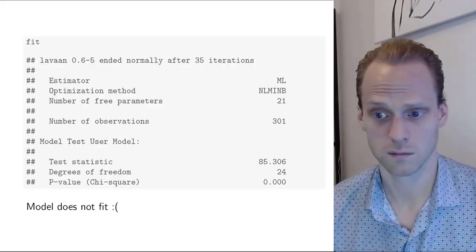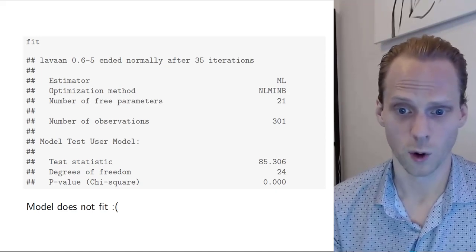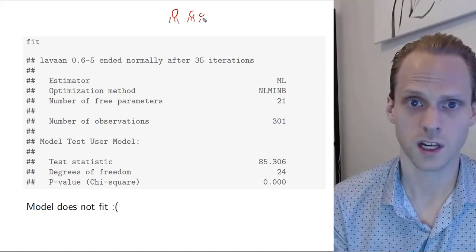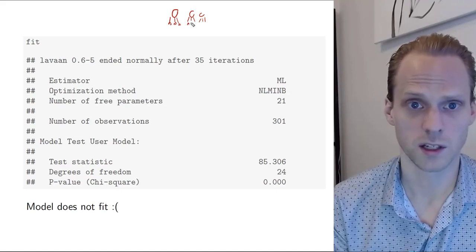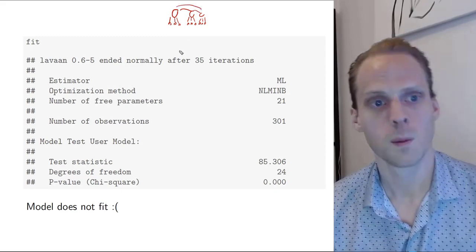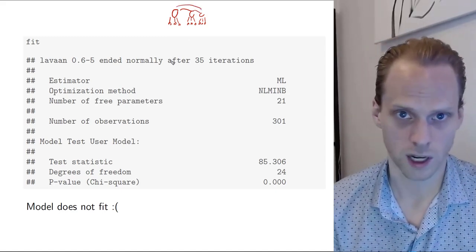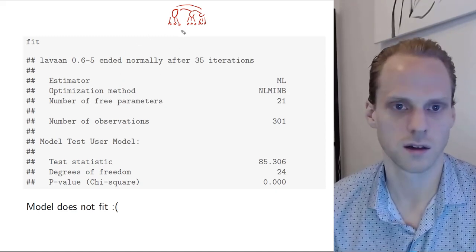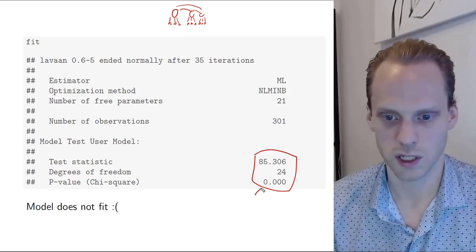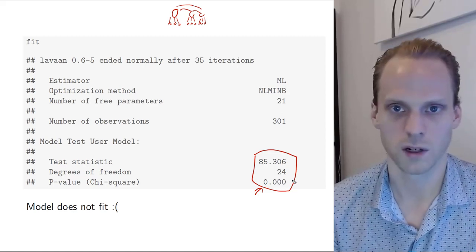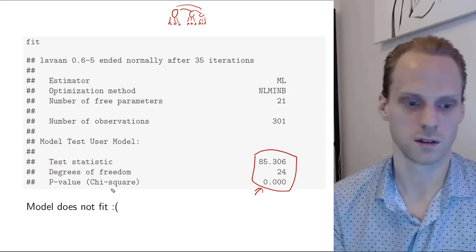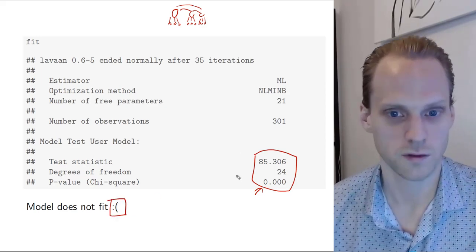Let's look at Lavaan. We have our Lavaan model, the Holzinger-Swineford data. It's a three-factor model with three indicators each designed to measure three abilities in schools: visual, textual, and speed abilities in children. I have a video online showing this data set in five different software packages, and you get the same chi-square test and degrees of freedom. We see that p is 0.0000, very low. So we could say the model does not fit.